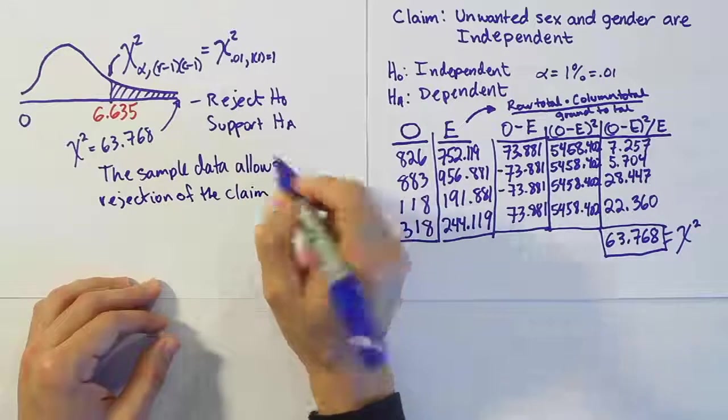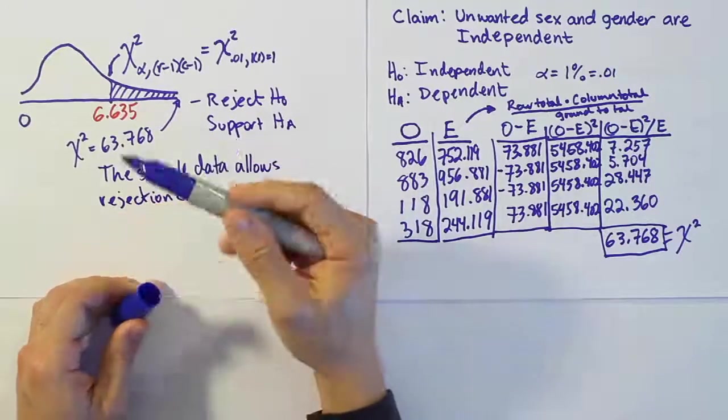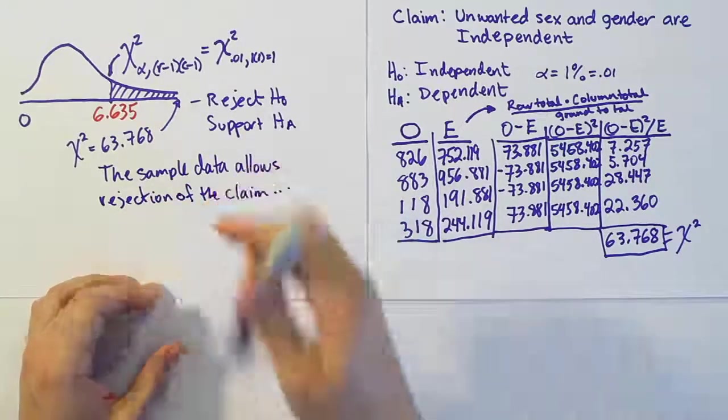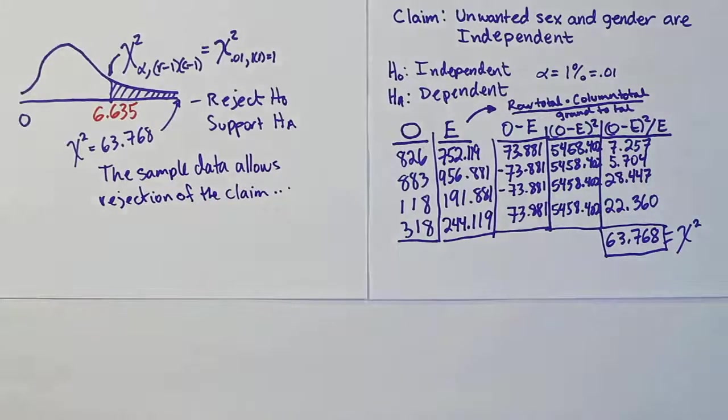And the claim, of course, is that unwanted sex and gender are independent variables. All right, so that's it.